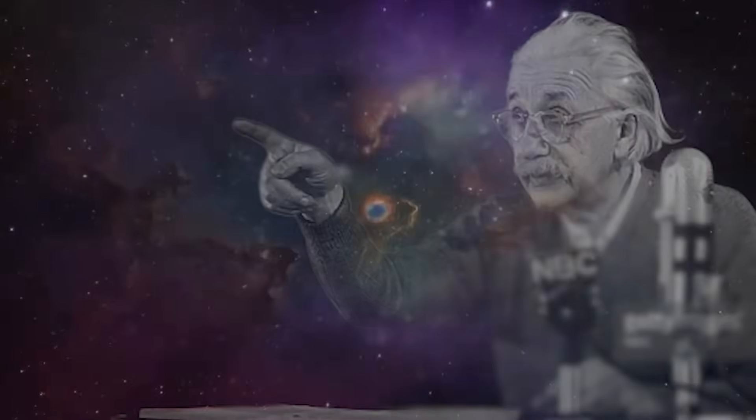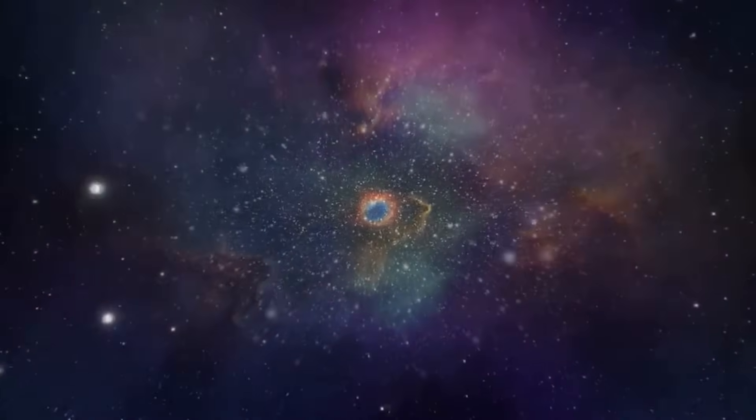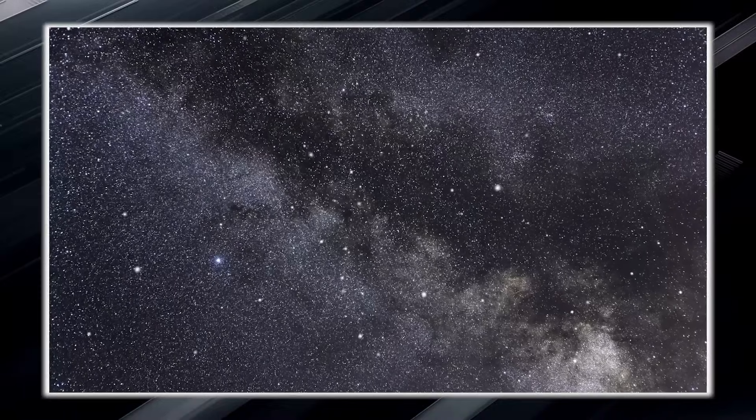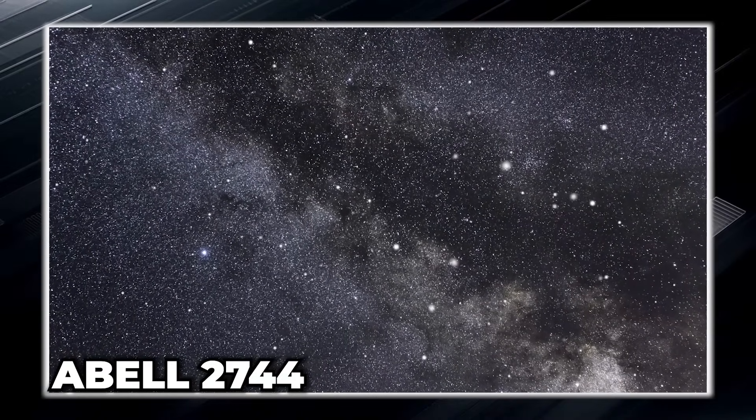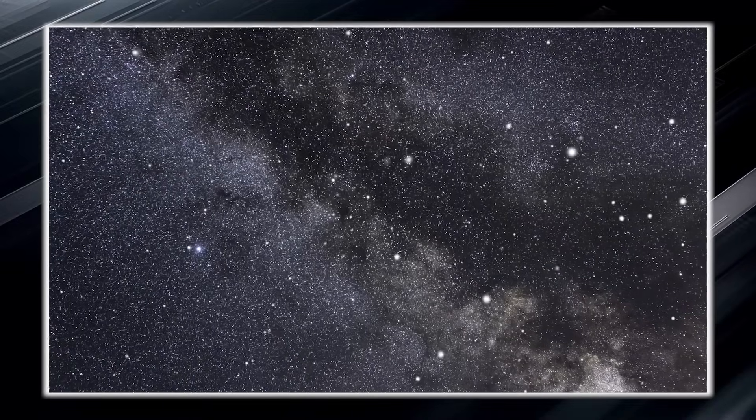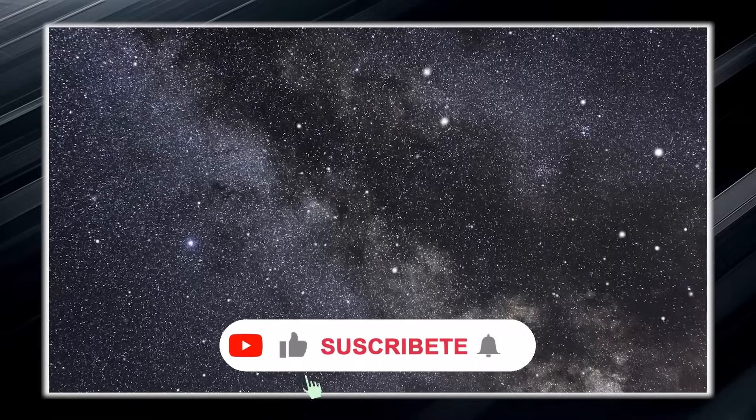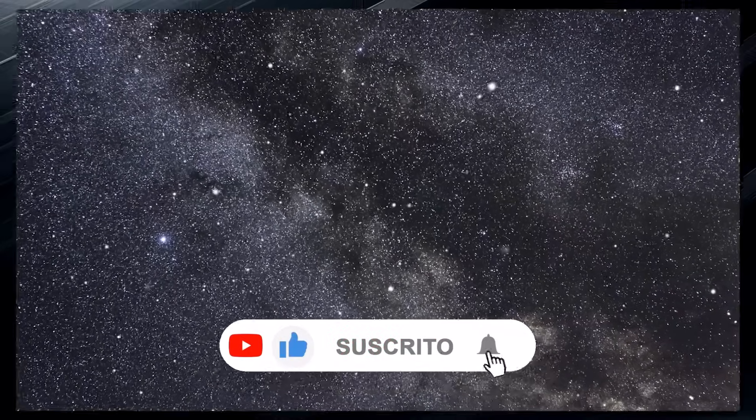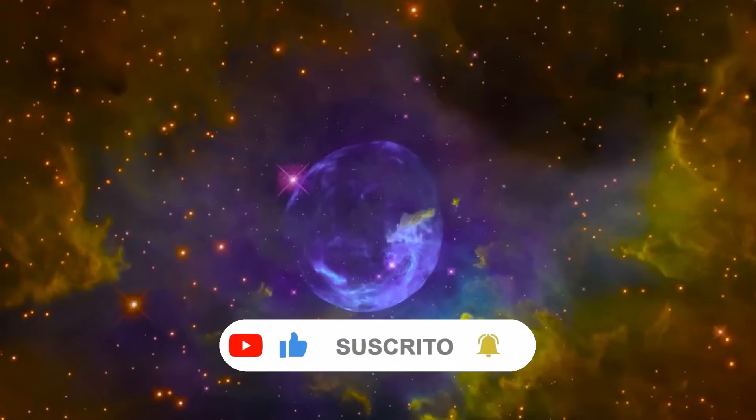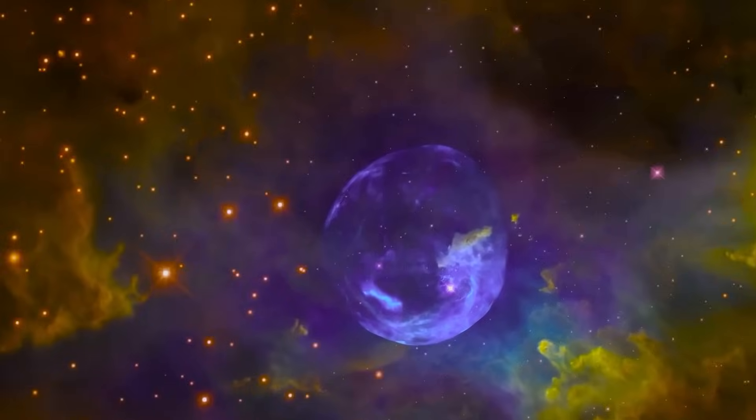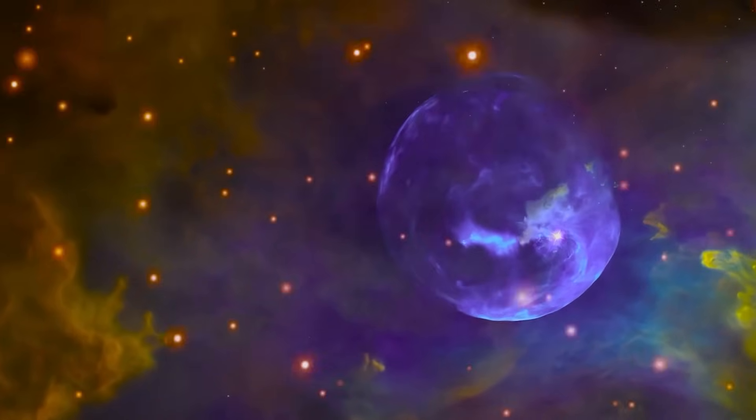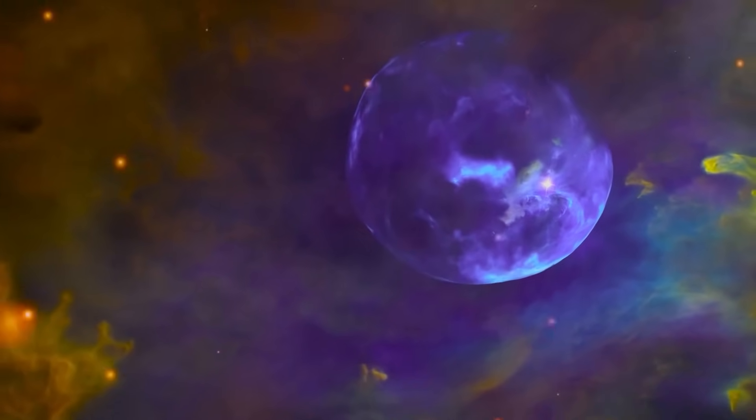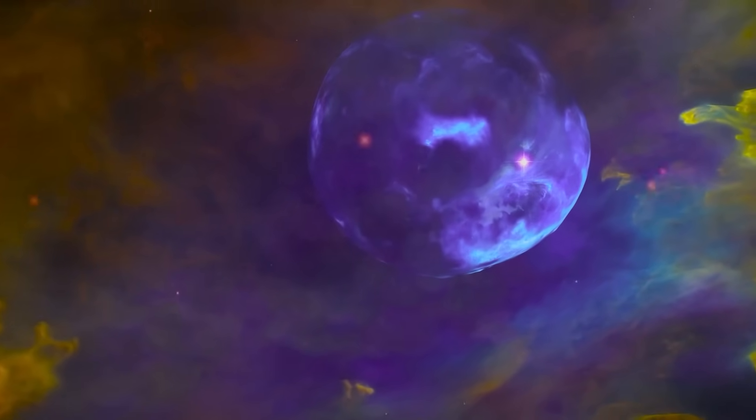These new images perplexed scientists as they revealed details they were unaware of in this region of space. However, it is important to note that this area of space has a formal name known as Abell 2744, which is part of the Pandora Cluster. What is fascinating about this image is that it has been observed before, but only the central core of space has been studied by the Hubble Space Telescope. This implies that many significant secrets remain to be discovered in this intriguing region of space.